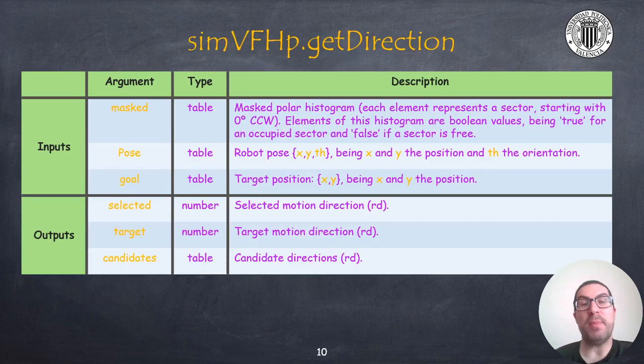The getDirection function evaluates the mass polar histogram and determines the desired direction of movement. So for this purpose, you need to provide the position of the robot. This is a table with the position and the orientation as we explained before, and also we need to provide the position of the target.